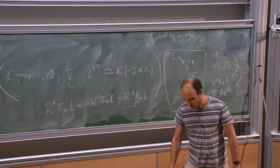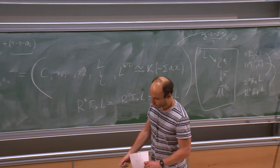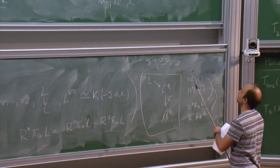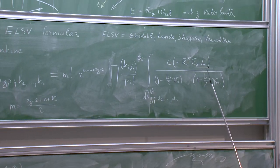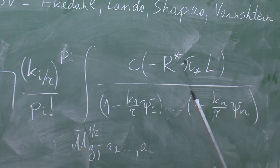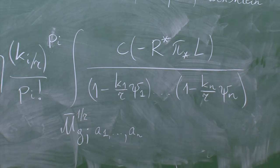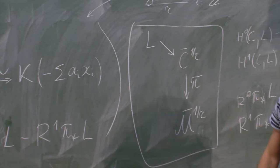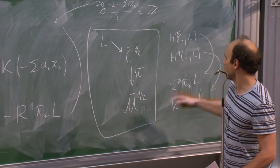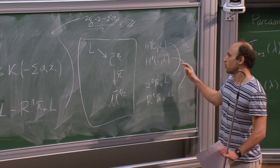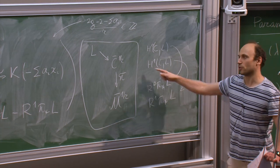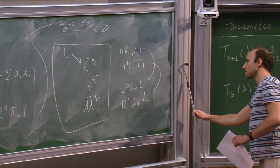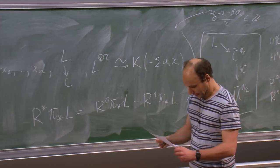You can check that in the case r=1, you recover the Chern class of the dual of the Hodge bundle, exactly as expected. If r=1, L is just the cotangent line bundle, whose H⁰ is the Hodge bundle, and H¹ is the trivial bundle ℂ, which has no Chern class.